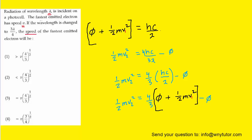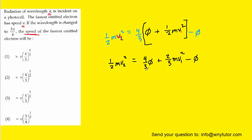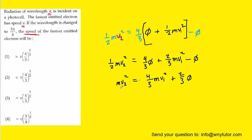Since the question asks for the speed of the fastest emitted electron in the second case, we solve the equation for v2. First, we distribute the 4/3, then combine like terms — we have 4/3 times the work function minus the work function. We multiply both sides by 2, divide both sides by mass m, and then take the square root of both sides.